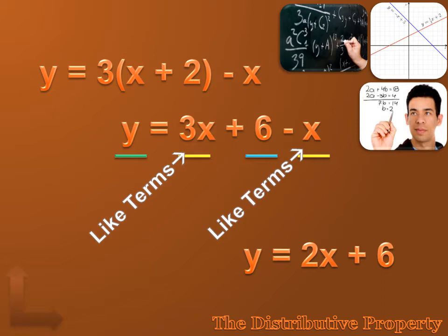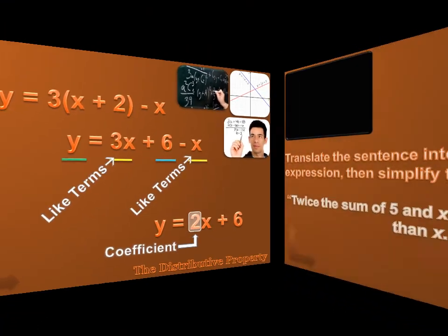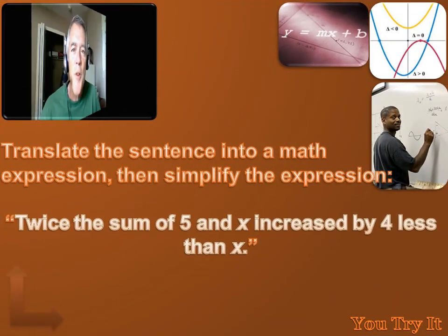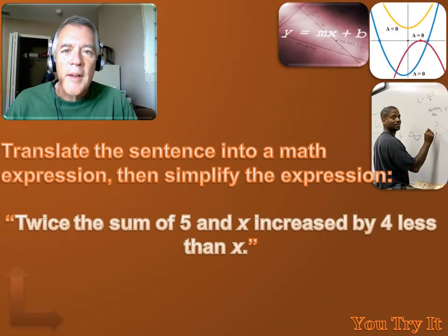Another vocabulary term you need to understand is what we call that two that's being multiplied by x. We call that the coefficient. The coefficient is a constant number that's being multiplied times a variable. Now you try this one — hit the pause button, do the problem, and then hit the forward key to move on to the answer.